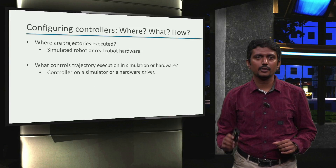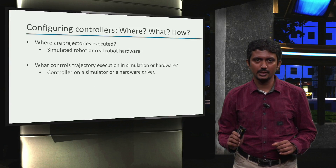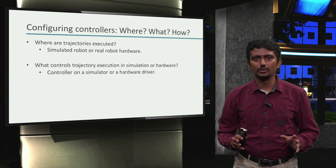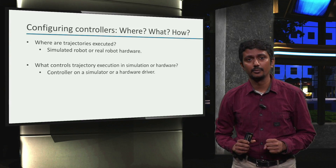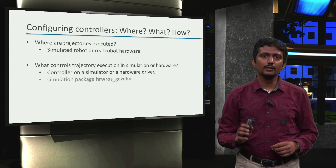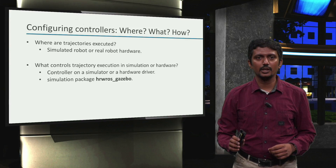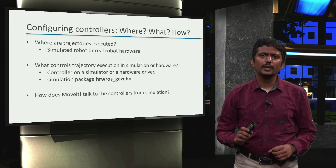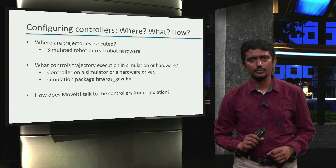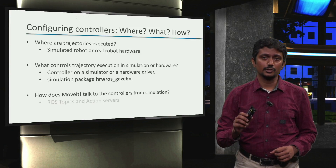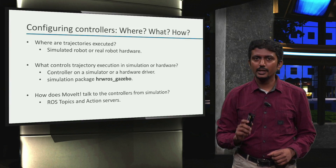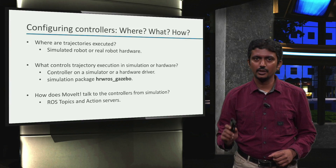In this course, we are using the Gazebo physics engine as a simulator for our robots. In many ways, we can consider Gazebo to be a replacement for real world hardware. Everything related to simulating our robots in this course is provided in the hrw-ros-gazebo package that comes with your installation. Then, how does MoveIt talk to these Gazebo controllers? Gazebo serves via ROS topics and action servers that we learned about in week 1. And these are exactly what we have to configure in the empty file we saw.